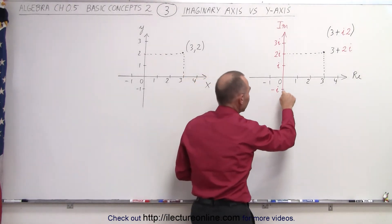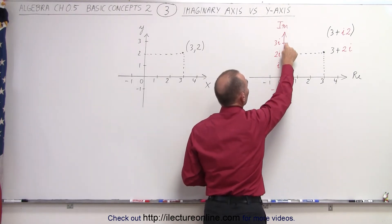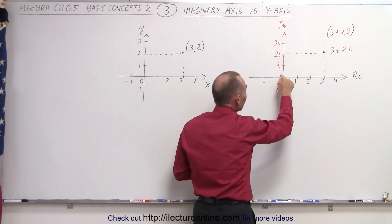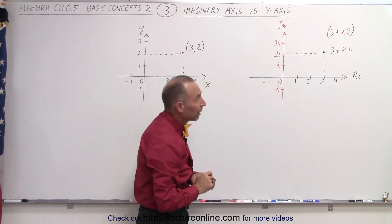Only an imaginary part. Like this number is negative i, that number is i, that number is 2i, that number is 3i. And only where the two axes cross, the imaginary number 0 is equal to the real number 0. And that makes sense.